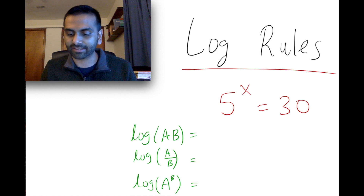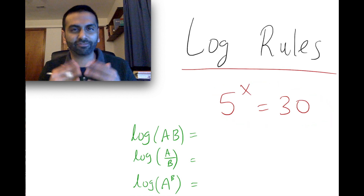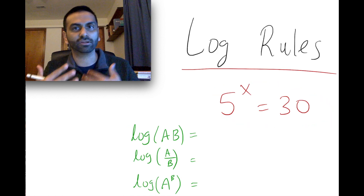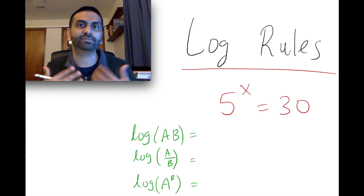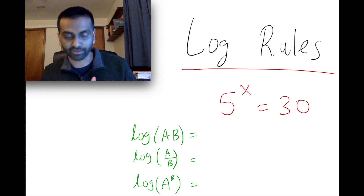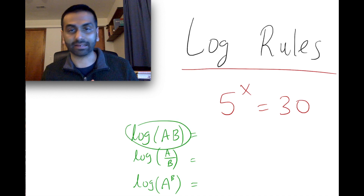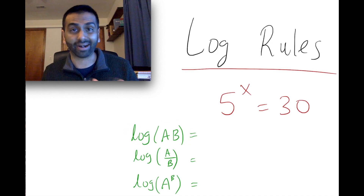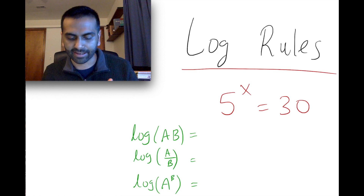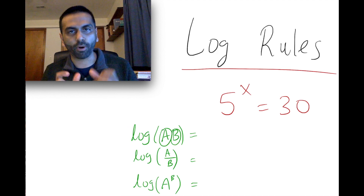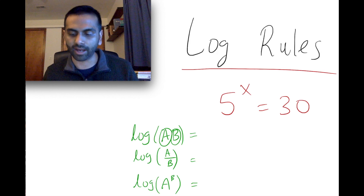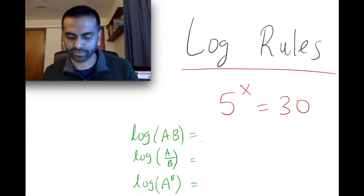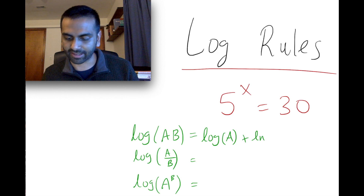We'll eventually get to this problem by the end of this video. But first, I'm going to talk about the three rules for logarithms. The first one is this: the log of a times b — where a and b are just anything, numbers, variables, or something like that — whenever two things are multiplied inside the log, that equals the log of the first plus the log of the second: log of a plus log of b.